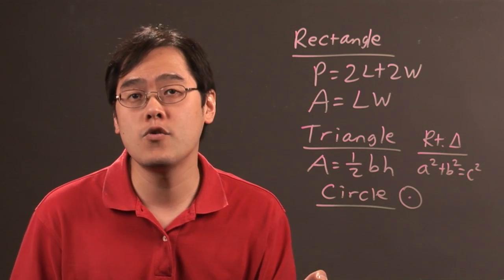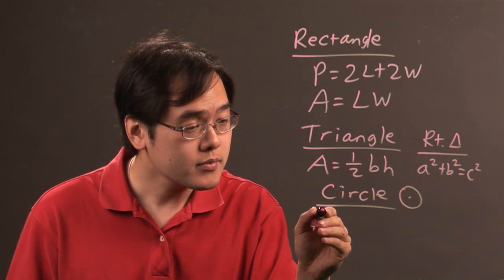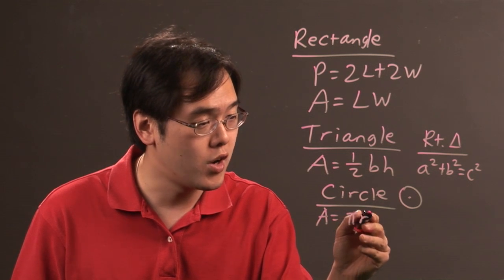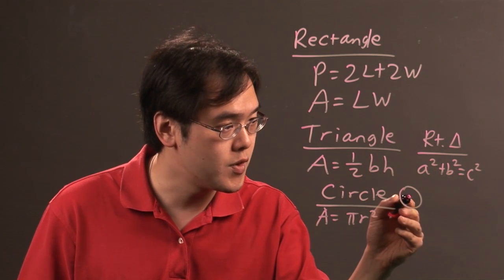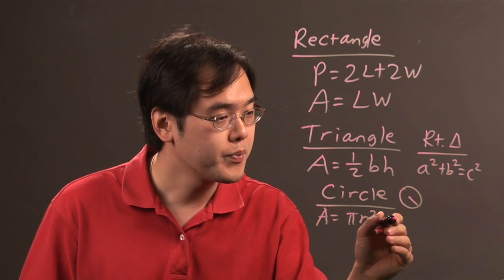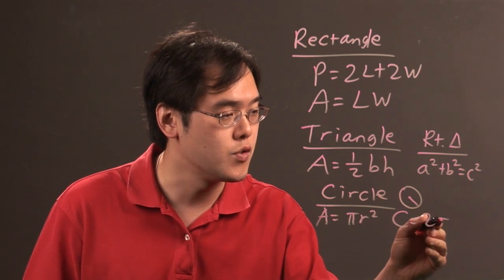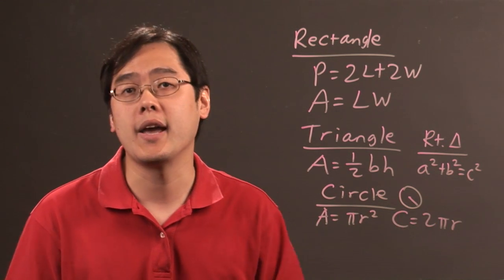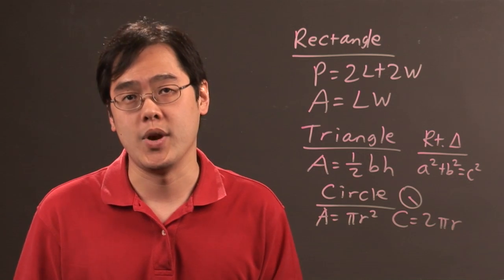Circles have two formulas that are often used. Area is equal to pi r squared, where r is the radius, the distance from the center to a point on the circle. Then the circumference, which is 2 pi r, 2 times pi, a number close to 3.14, and then times the radius.